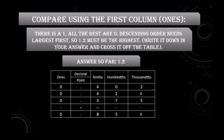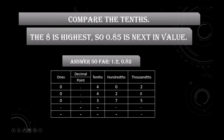Write it down in your answer and cross it from the table. The answer so far is 1.2. Now we remove 1.2 from the table. Compare the tenths — the eight is the highest, so 0.85 is next in value. The answer so far is 1.2, then 0.85. Remove 0.85 from the table.